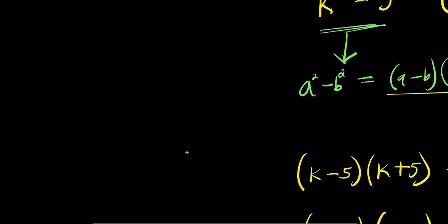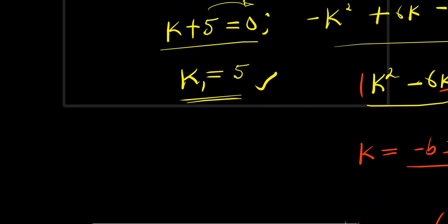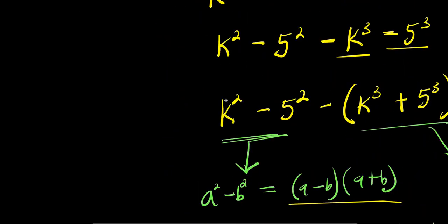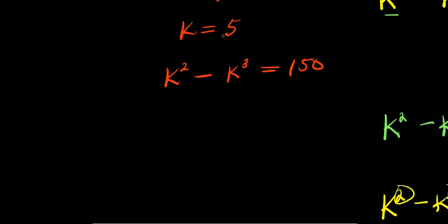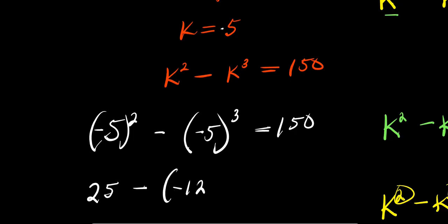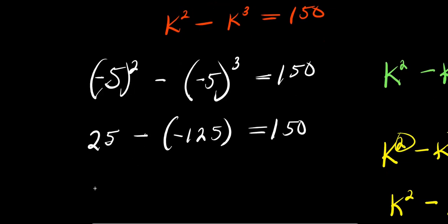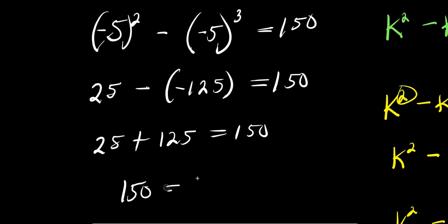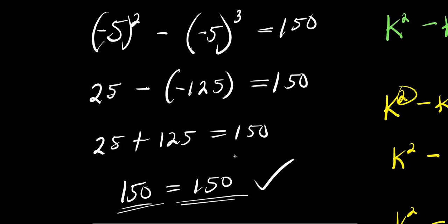Remember, k is negative 5 here, not positive 5. Substituting k equals negative 5: negative 5 squared minus negative 5 cubed equals 150. Negative 5 squared is positive 25, minus negative 5 cubed which is negative 125, so 25 plus 125 equals 150. Both sides equal 150, confirming our solution. Thank you and goodbye.